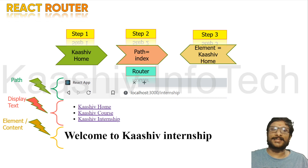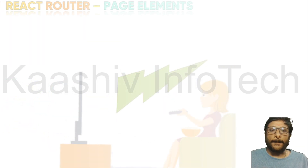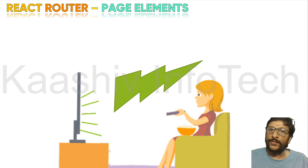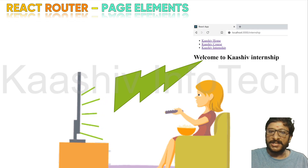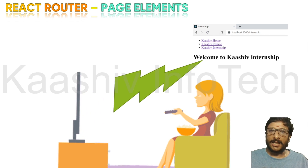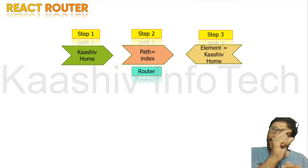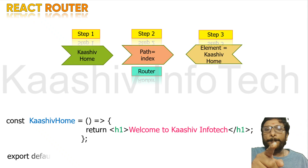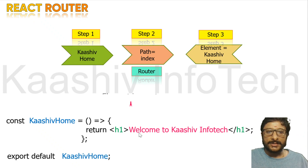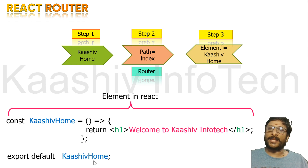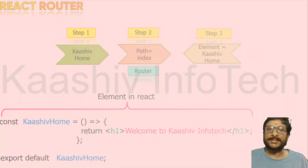Now, let's talk about page elements and how they work. As mentioned, we have Kashi home — clicking it loads the webpage and the element. The element is nothing but HTML; the basic HTML is here. This can be placed as a variable, and you use that variable to load it. That is how the entire React.js router works.